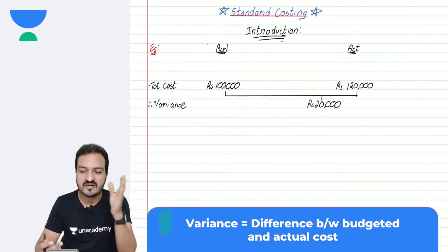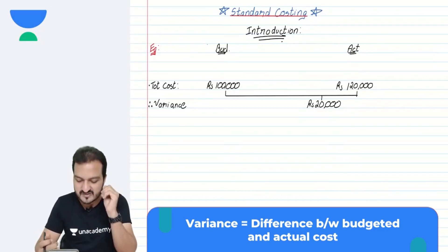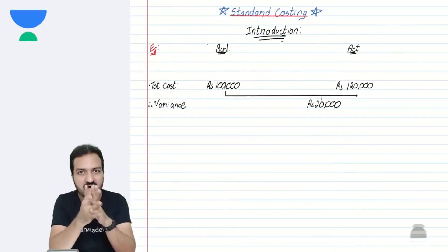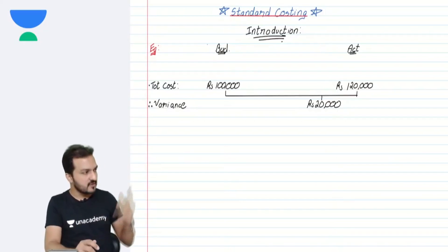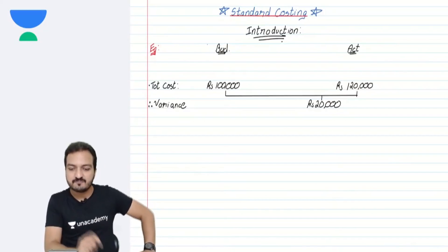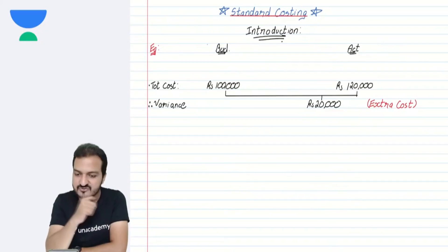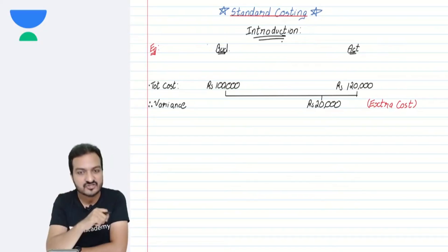Variance means a difference between my budgeted cost and actual cost. Why would a company calculate that 20,000 variance? Because you need to find out the reasons for the value of the variance, and absolutely, yes — take corrective actions.